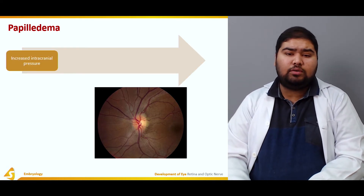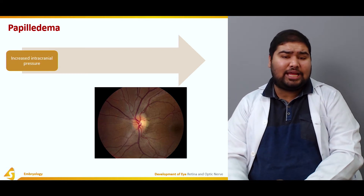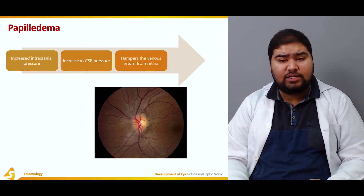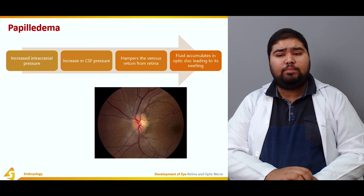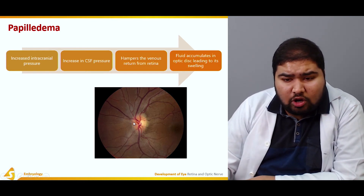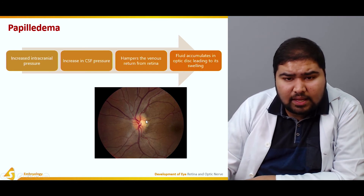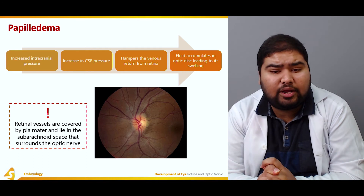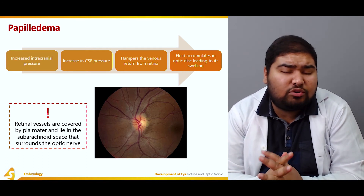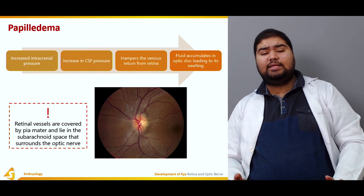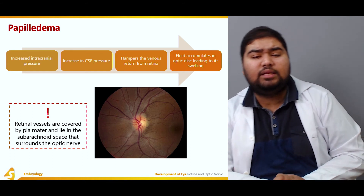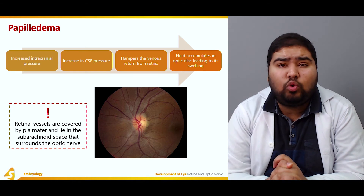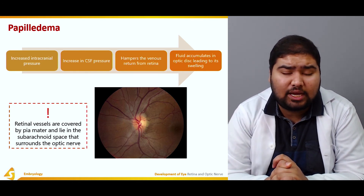Moving on to papilledema: an increase in intracranial pressure causes an increase in cerebrospinal fluid pressure. As a result, this hampers venous return from the retina, and fluid accumulates in the optic disc leading to its swelling — papilledema. The retinal vessels are covered by pia mater and lie in the subarachnoid space surrounding the optic nerve, leaving little margin for swelling. The cause is usually raised intracranial pressure. Papilledema is an important diagnostic sign, though not a disease in itself.